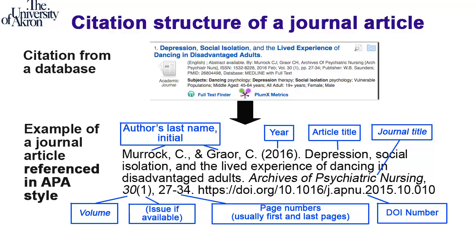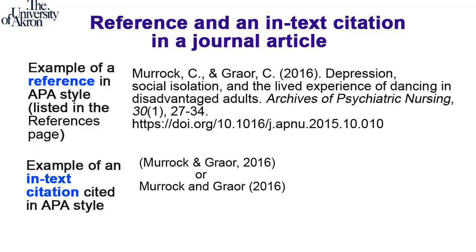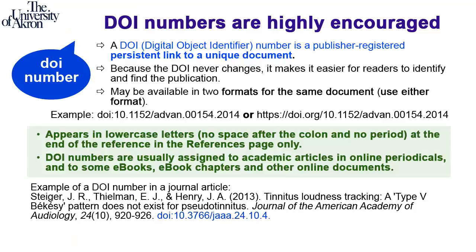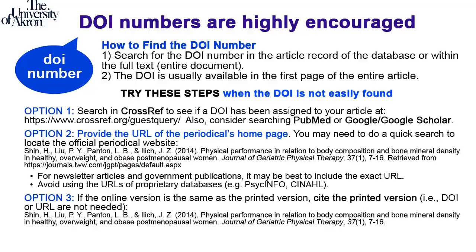In comparison to the in-text citation, the reference in APA style contains the full citation information. The in-text citation contains the author's last name followed by initials of first and middle names. When citing journal articles in the references page, italicize the title of the journal and the volume number. For the article title, capitalize only the first word of the title, the first word after the subtitle, and proper nouns. The digital object identifier, or DOI, is a long unique numeric code included at the end of a reference. If the DOI of an article is not provided, include the URL of the journal's home page.